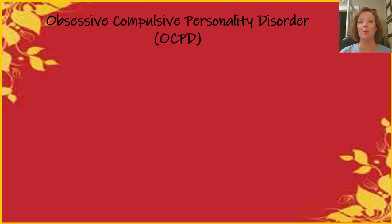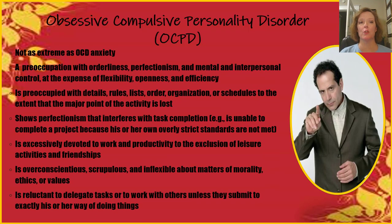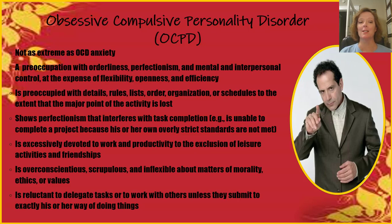Obsessive-compulsive personality disorder, or OCPD, is not as extreme as obsessive-compulsive disorder. It involves a preoccupation with orderliness, perfectionism, and mental and interpersonal control, often at the expense of flexibility, openness, and efficiency. A person with OCPD is preoccupied with details, rules, lists, order, organization, or schedules to the extent that the major point of the activity is lost. Their perfectionism can actually interfere with task completion because their overly strict standards aren't met. This type of person is excessively devoted to work and productivity to the exclusion of leisure activities and friendships, is over-conscientious and inflexible about matters of morality, ethics, or values, and tends to be reluctant to delegate tasks unless others submit to exactly their way of doing things.